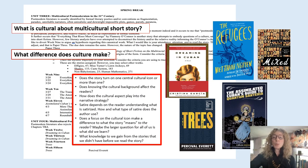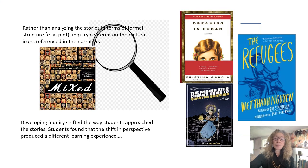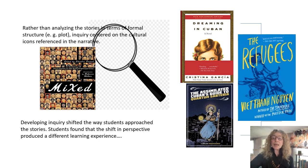Returning from spring break, we prepared to tackle the big question: What is cultural about the multicultural short story? What difference, if any, does reading culture make? Instead of formal analysis, we asked new questions. Does the story turn on one central cultural icon or more than one? How do cultural aspects function as narrative strategy? How and what types of satire did the author use? Does a focus on the cultural icon make a difference to what the story means to the reader? The students agreed that if satire depends on understanding what is being satirized, their task as critical readers would be to gain knowledge of the objects being satirized and to consider that role in the narrative.